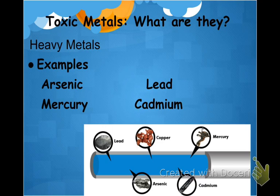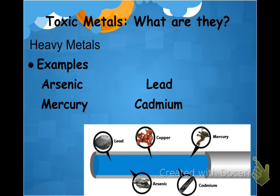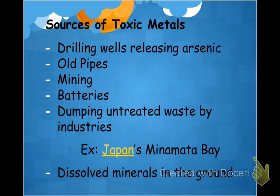Another source of pollution is heavy metals, sometimes called toxic metals. The four main ones we look at are arsenic, mercury, lead, and cadmium. Arsenic is naturally found in the ground, so if you drill a well through arsenic-containing rock, it can get into your well water. Lead can enter water from lead pipes. Mercury and cadmium are often found in toxic waste. Toxic metals enter water from old pipes, drilling wells, mining, and batteries in landfills leaching into groundwater.